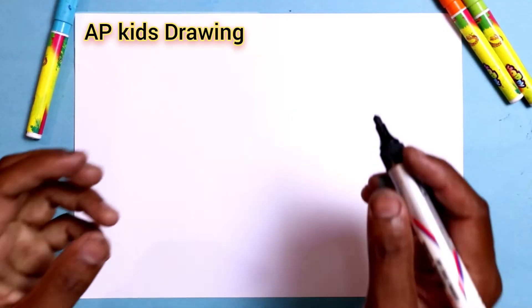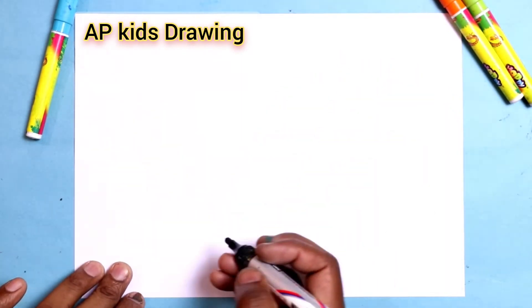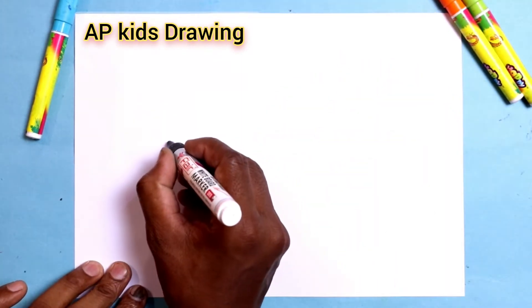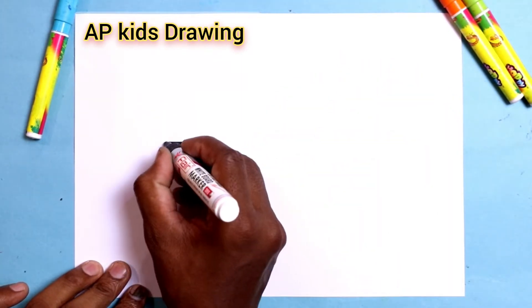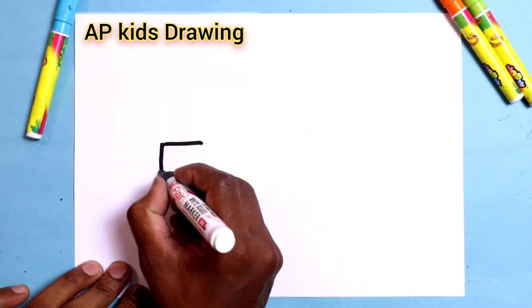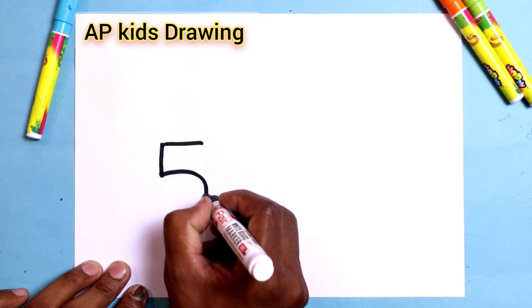Hello children, I am Abhay Pratap and you are watching AP Kids Drawing. Today we are drawing a car from number 55, step by step. Firstly we write 55 on this paper. Let's draw.